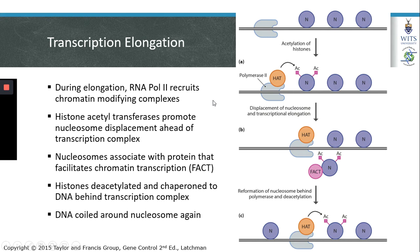As RNA polymerase 2 continues with the process of elongation, it is involved in recruiting other chromatin modifying complexes. For example, Pol II can recruit a histone acetyltransferase. The histone acetyltransferase is involved in acetylating histones in the nucleosomes ahead of the RNA polymerase, which results in displacement of the nucleosome and allows the RNA polymerase to continue traveling along the DNA strand to transcribe DNA into RNA.